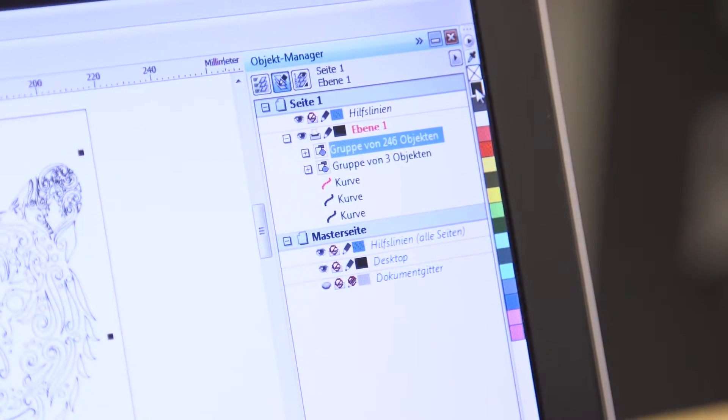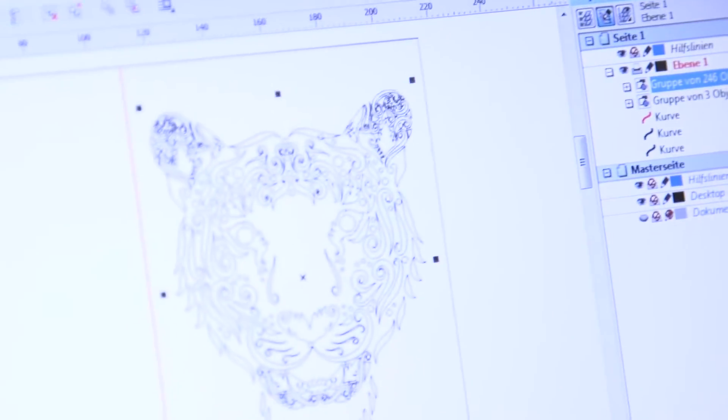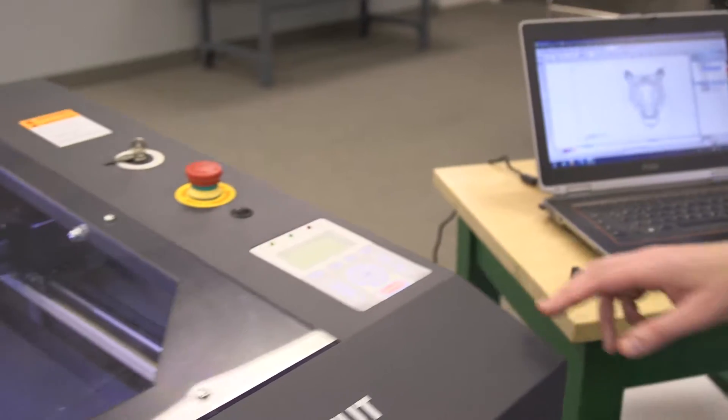So our colour palette, say if we want this tiger to be cut out, we would change that to black. We press print, and then all of a sudden we're going to start up our laser cutter.